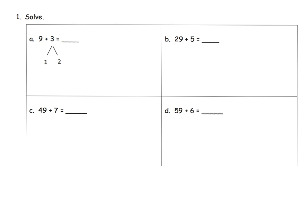As a quick recap: we've got a 9 that's pretty close to 10, so we're going to decompose the 3 to give us a 1 and a 2. That way, 9 plus 1 is 10, so 10 plus 2 is 12. Our general strategy is to decompose one of the two numbers so that we can bump something up to a 10 or a multiple of 10.